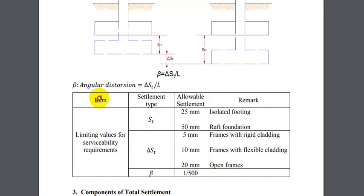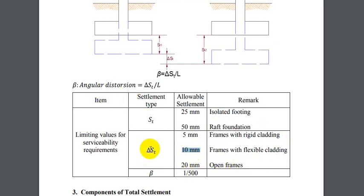هذا الجدول يوضح Limiting Values for Serviceability Requirements. حتى يحقق الأساس متطلبات الخدمية، يجب أن لا يتجاوز الهبوط الكلي S_T قيمة 25mm للأسس المنفصلة و50mm للأسس الرافت. الهبوط التفاضلي delta-ST يجب ألا يتجاوز 5mm لـFrames with Rigid Cladding، و10mm لـFrames with Flexible Cladding، و20mm لـOpen Frames. كذلك Angular Distortion (beta) يجب ألا تتجاوز 1/500.